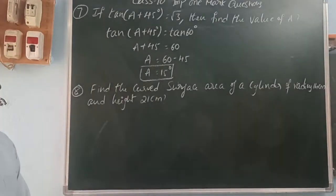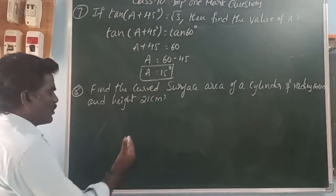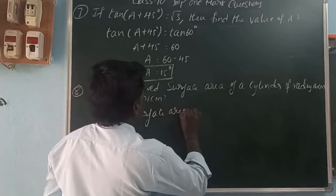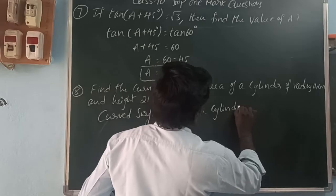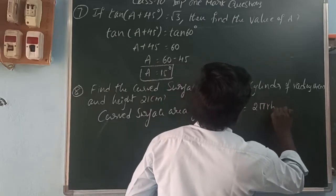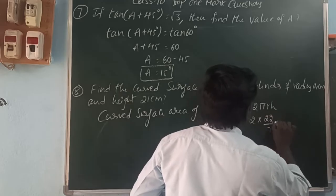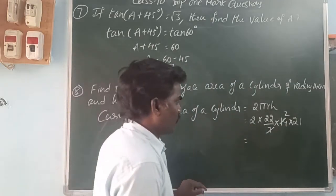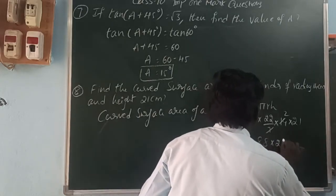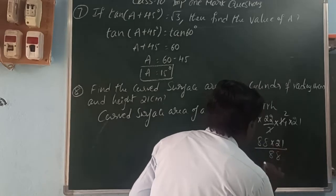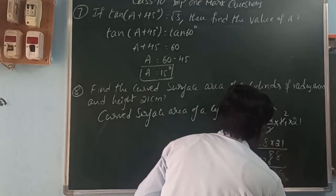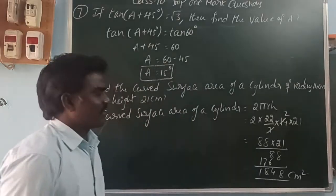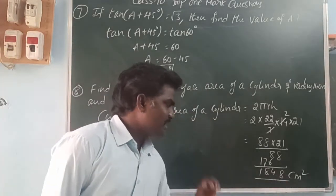Find the curved surface area of a cylinder with radius 14 cm and height 21 cm. The curved surface area of a cylinder is 2πrh. So 2 times 22/7 times 14 times 21 equals 1848 cm squared. The curved surface area of the cylinder is 1848 cm squared.